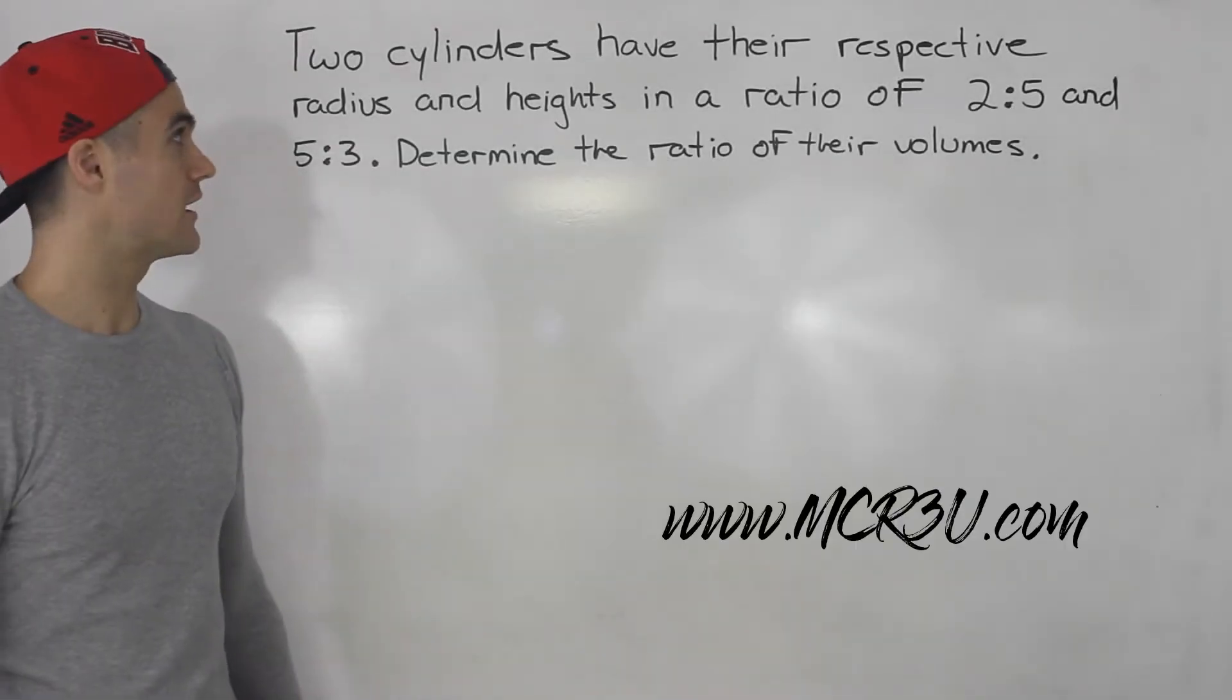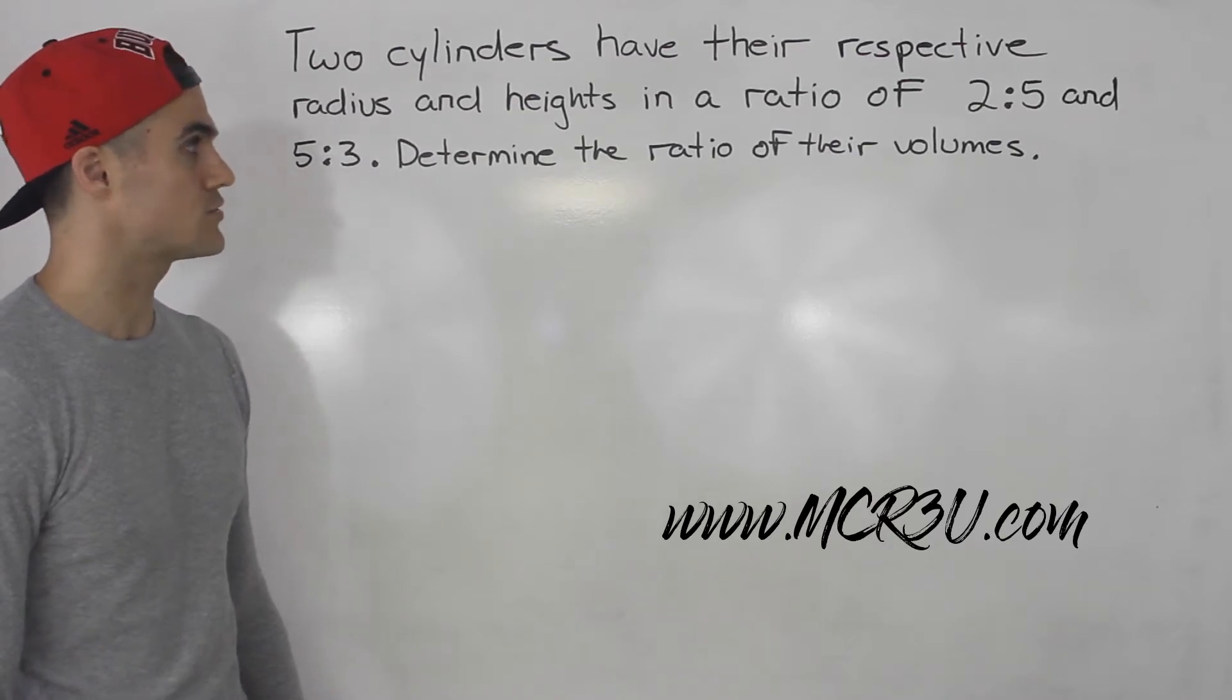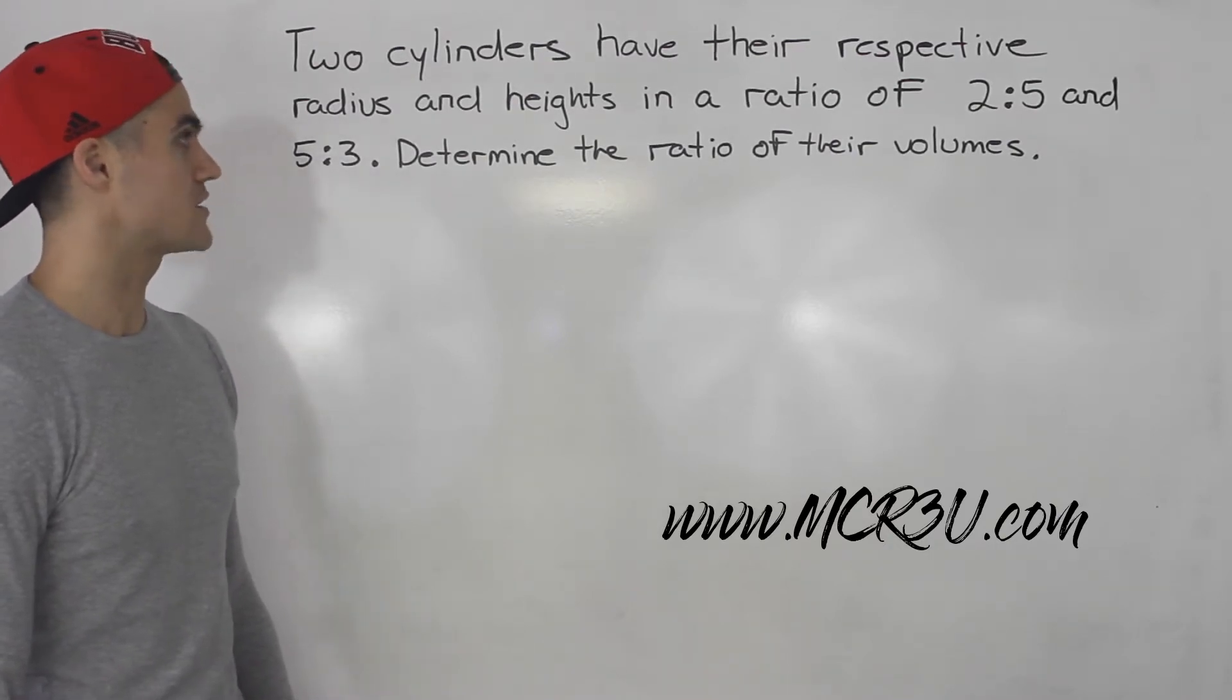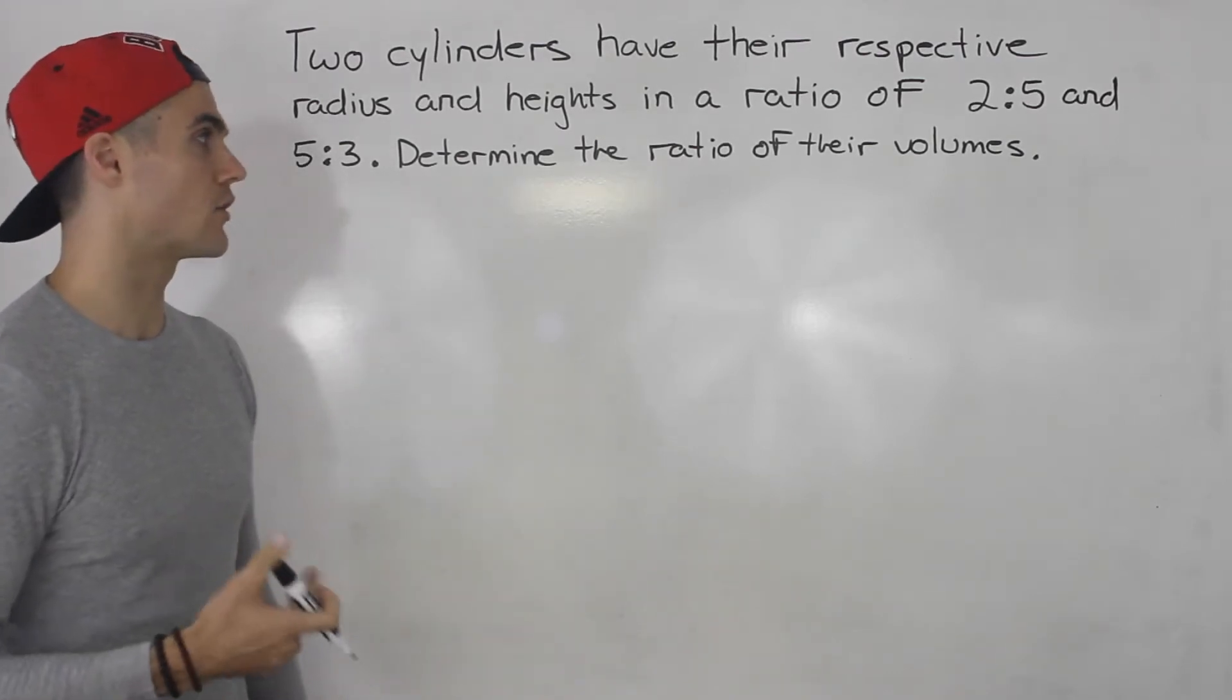Welcome back everybody. Patrick here. In this question we're told that two cylinders have their respective radius and heights in a ratio of 2 to 5 and 5 to 3, and we have to determine the ratio of their volumes.